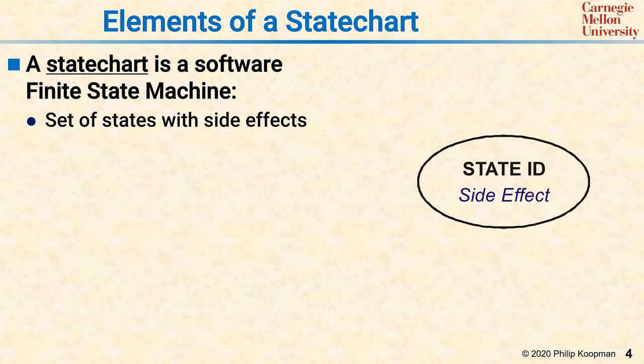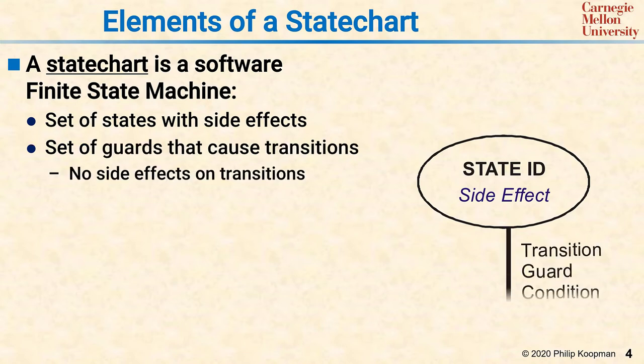For example, setting an output to something or setting a variable to a particular value. The system moves from state to state along transition arrows that have guard conditions. The arrow is activated when the guard is true, and if the guard is false, the arrow is not taken.